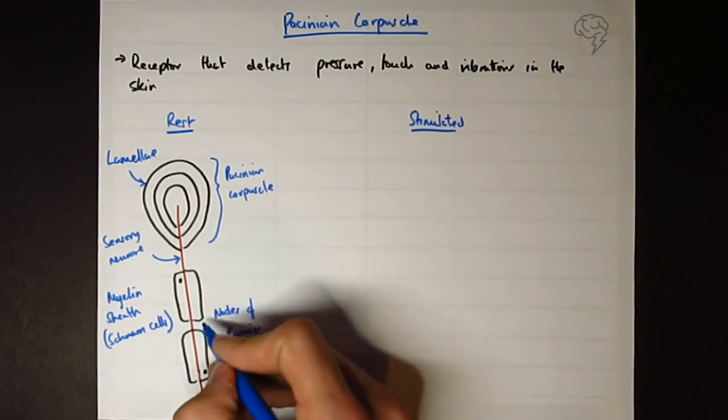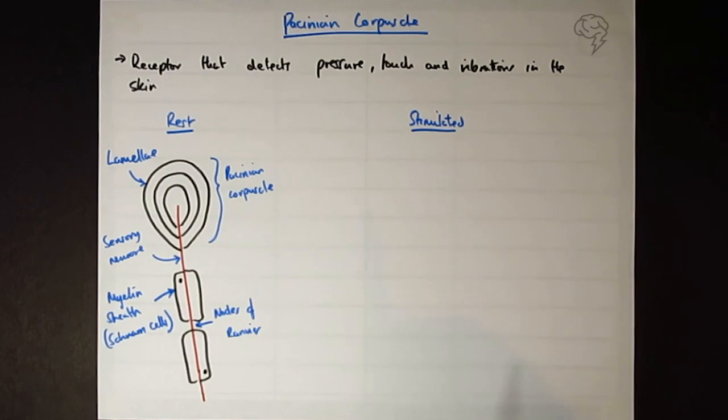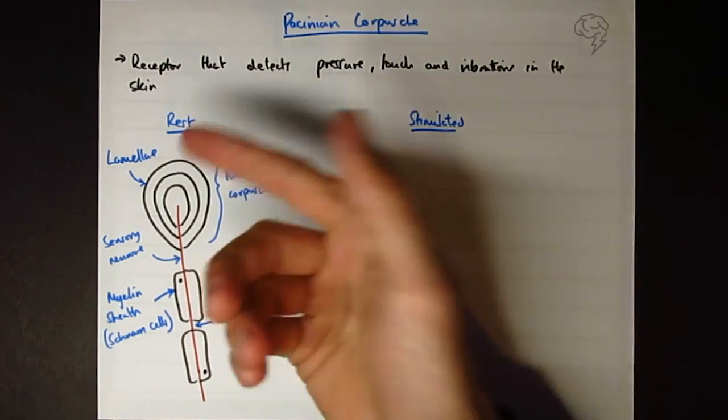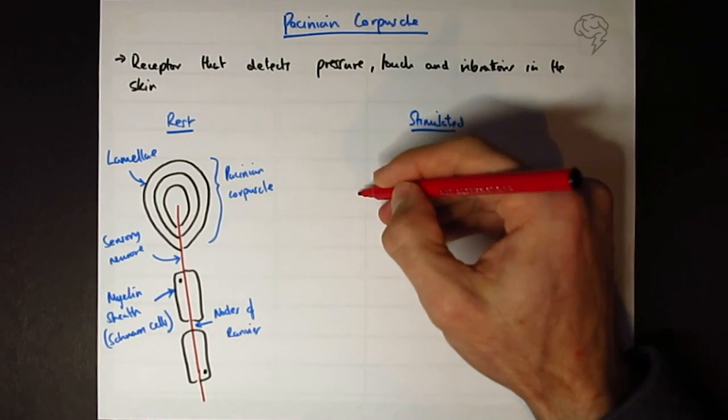So this is a myelinated neuron, and it's going to be a sensory neuron because it's connecting to a receptor. So at rest, sodium-potassium pump maintaining the resting potential. If you've not seen the video on resting potential and action potentials, and you don't know what a generator potential is, go and watch that now, because you're going to need to know what that is before understanding the rest of this.